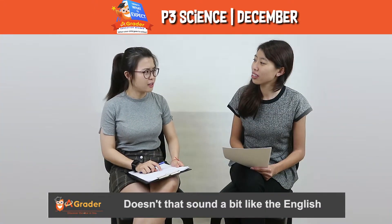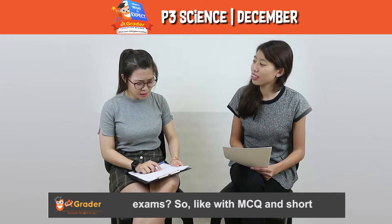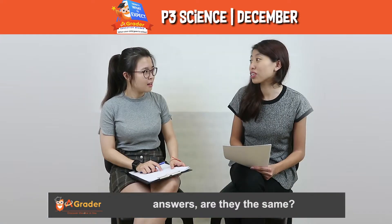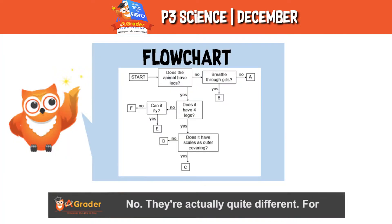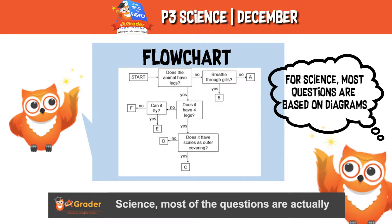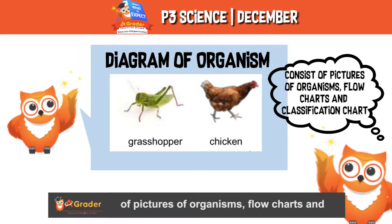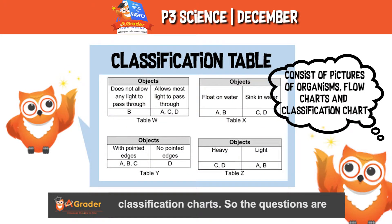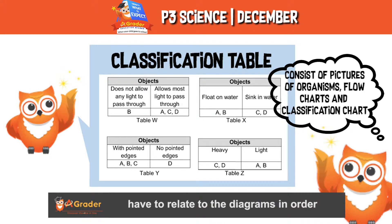Doesn't that sound a bit like English exams? With MCQ and short answers, are they the same? Oh no, they are actually quite different. For science, most of the questions are based on diagrams, which consist of pictures of organisms, flow charts, and classification charts. The questions are raised in a way that students have to relate to the diagram in order to answer them accordingly.